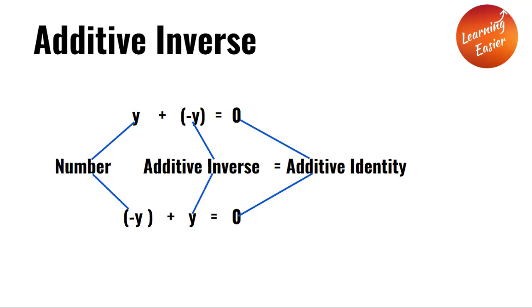y is the number, and its additive inverse is negative y, which equals the additive identity, zero. The same applies in reverse: if negative y is the number, then the additive inverse is y. When you add both numbers, you get zero.